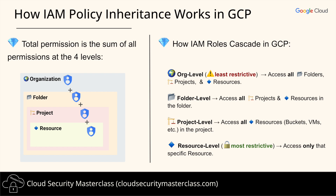Now let's talk about how GCP organizes its resources. At the very top you have the GCP organization. Below that you have folders, then projects, and finally at the bottom, individual resources like storage buckets, VMs, and databases. Here's the key part: IAM roles from different levels don't override each other — they add up. So a user can inherit multiple permissions from different levels, and the sum of all those permissions determines what they can actually do.